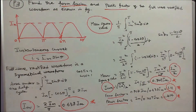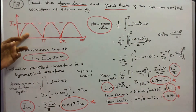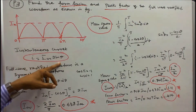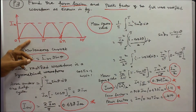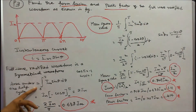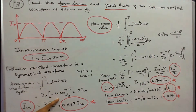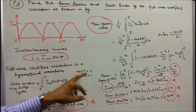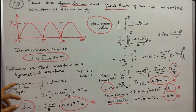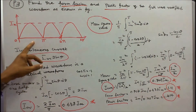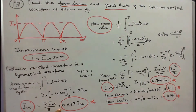Problem 3: find the form factor and peak factor of the full wave rectified waveform as shown in the figure. The maximum current is I_m, so instantaneous current I = I_m × sin θ. This is a symmetrical waveform. Area under one half cycle = integral from 0 to pi of I_m × sin θ dθ = 2 I_m. Therefore, I_average = 2 I_m / pi = 0.637 I_m.